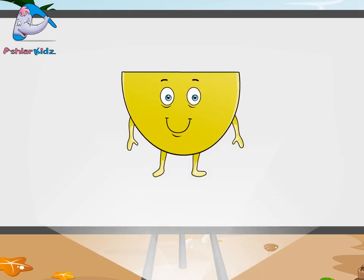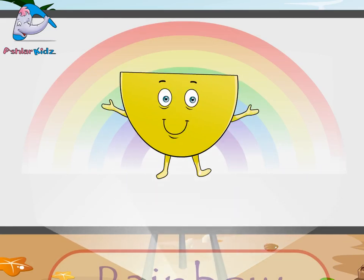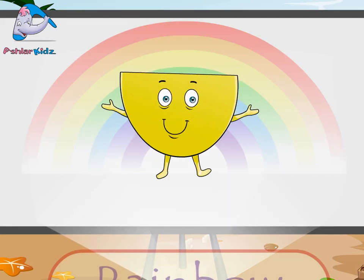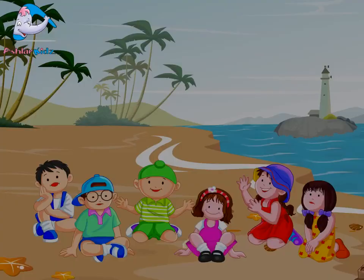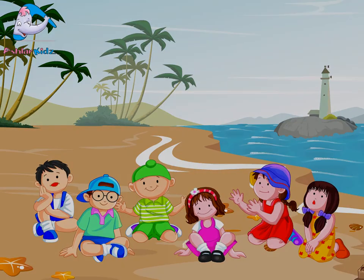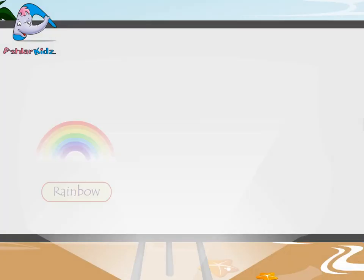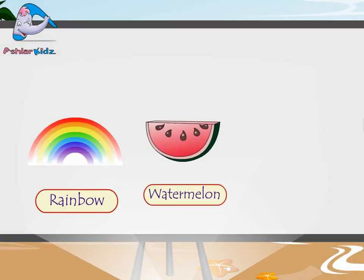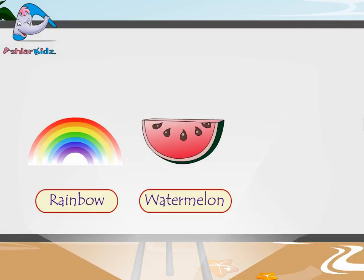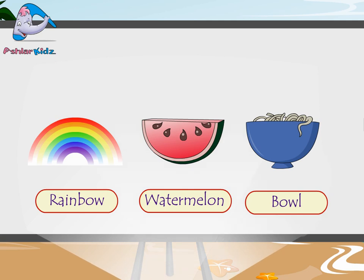When you see that rainbow, I will be around. Ha ha ha! Come now, let's see the examples of semi-circle: rainbow, watermelon, bowl.